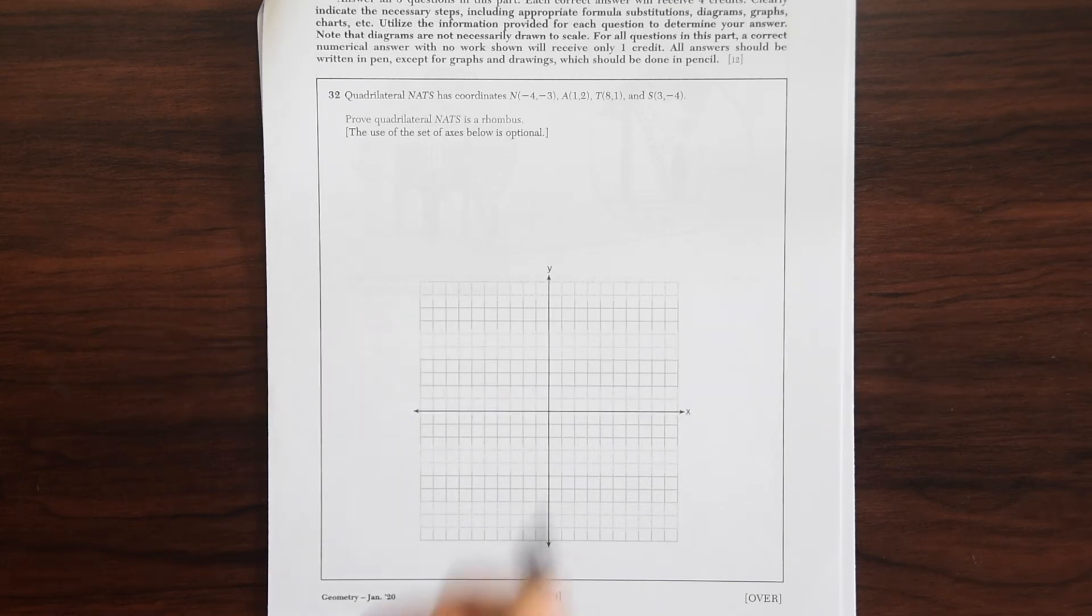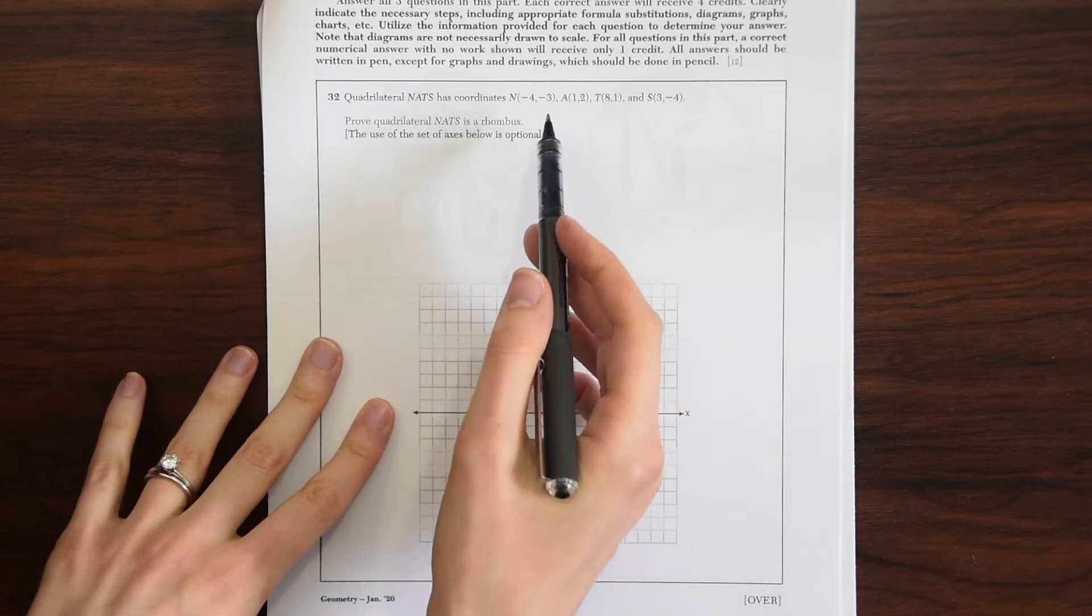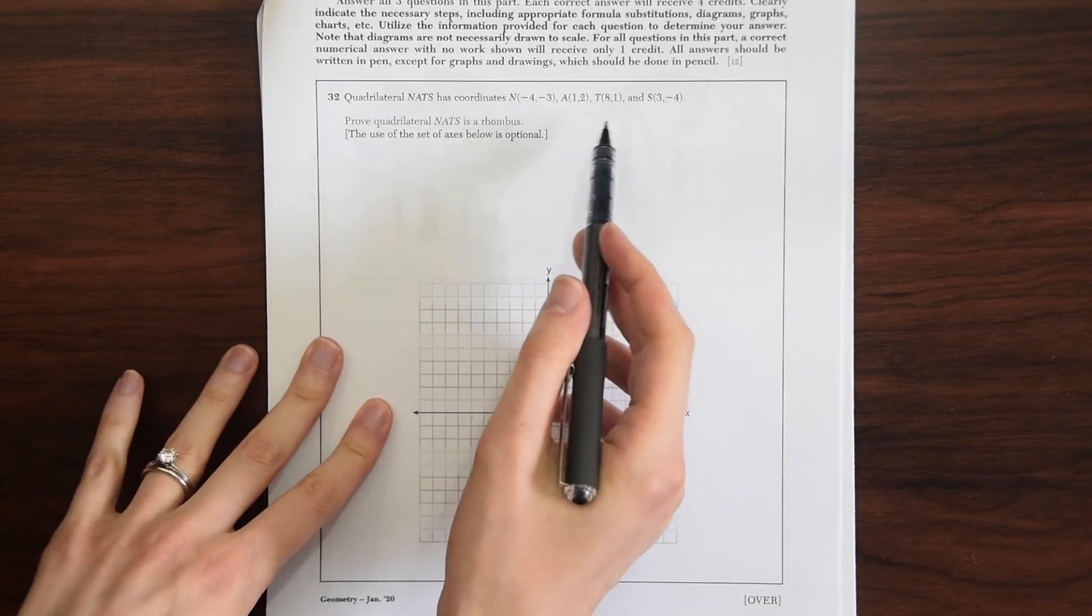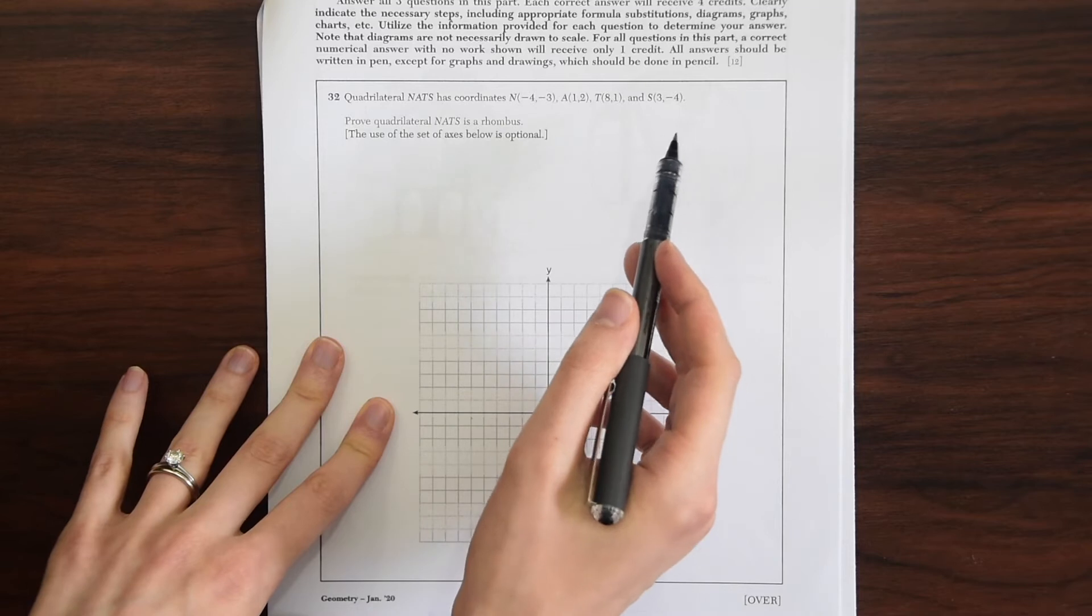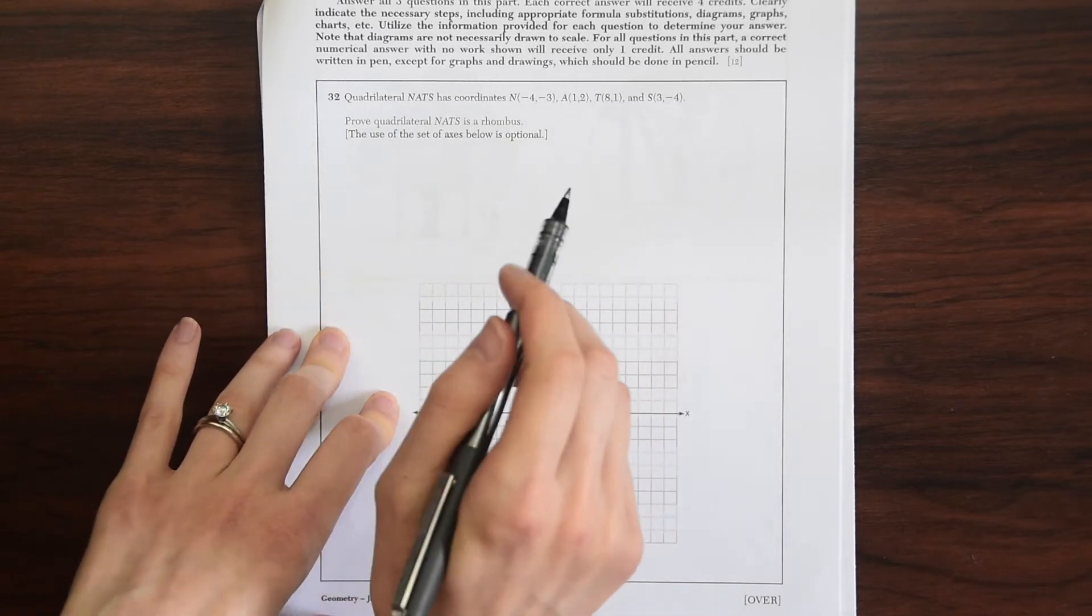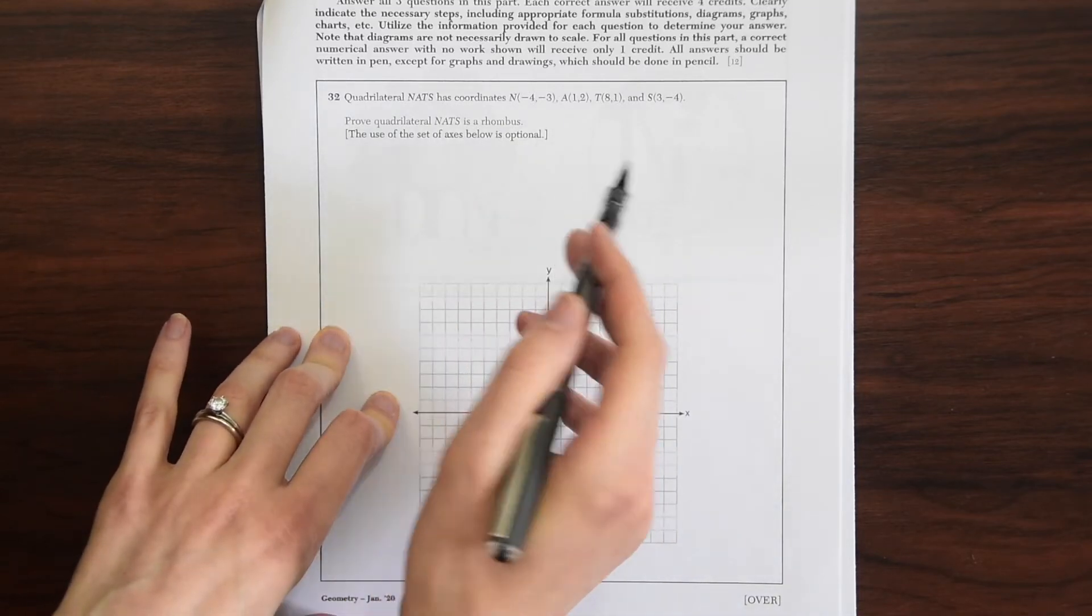Quadrilateral NATS has coordinates N(-4,-3), A(1,2), T(8,1), and S(3,-4). Prove quadrilateral NATS is a rhombus.